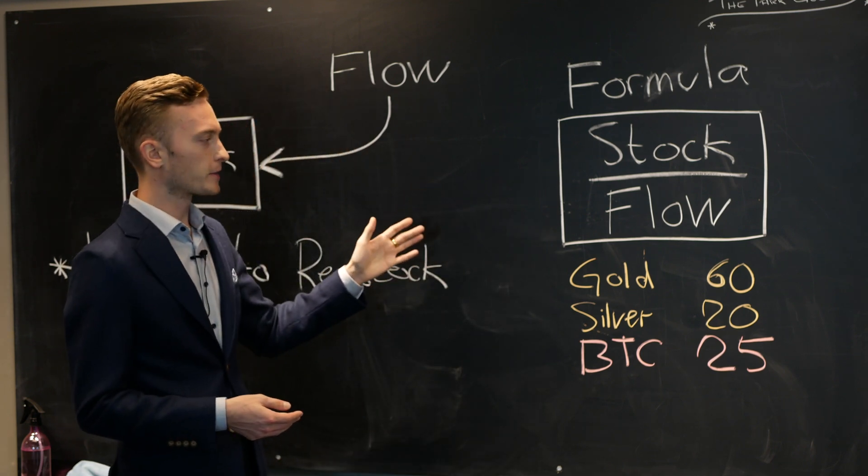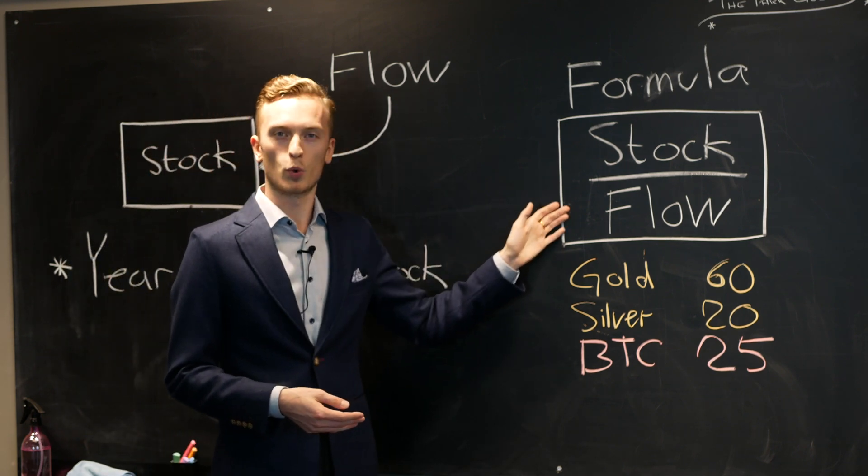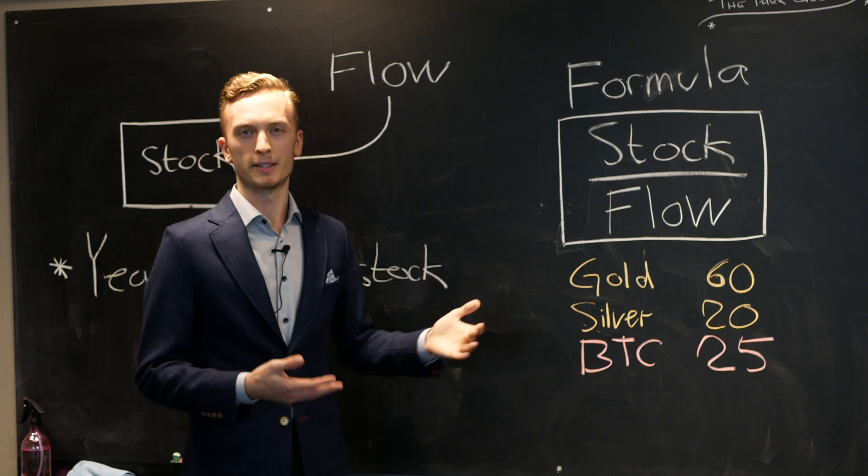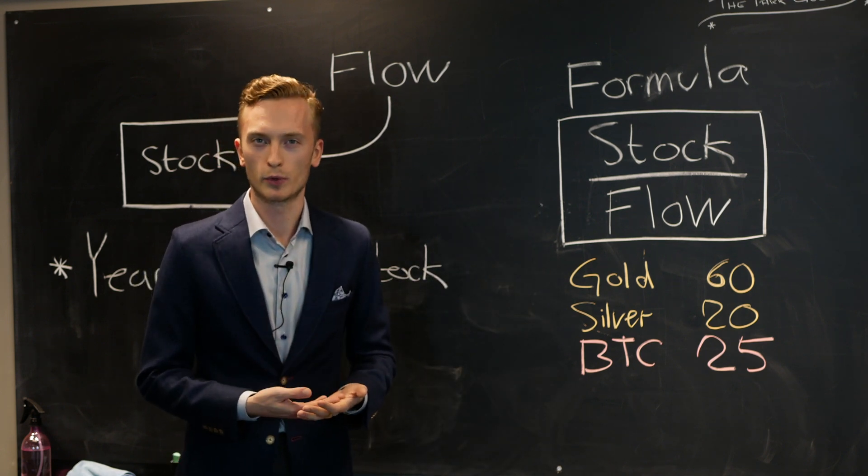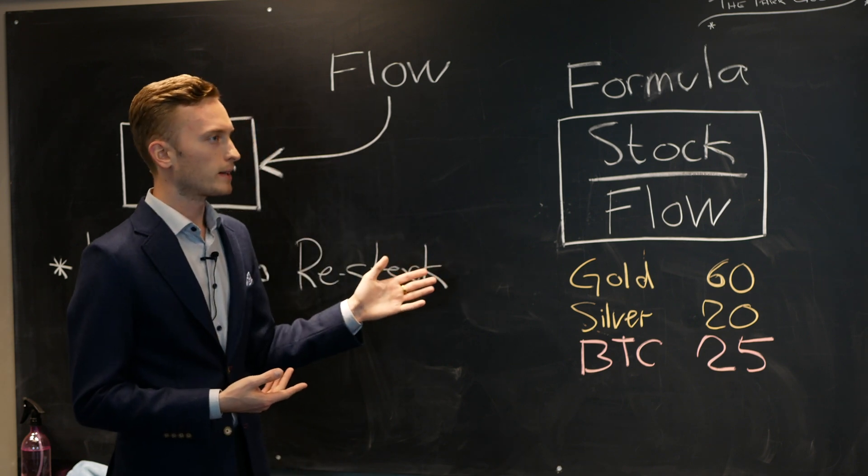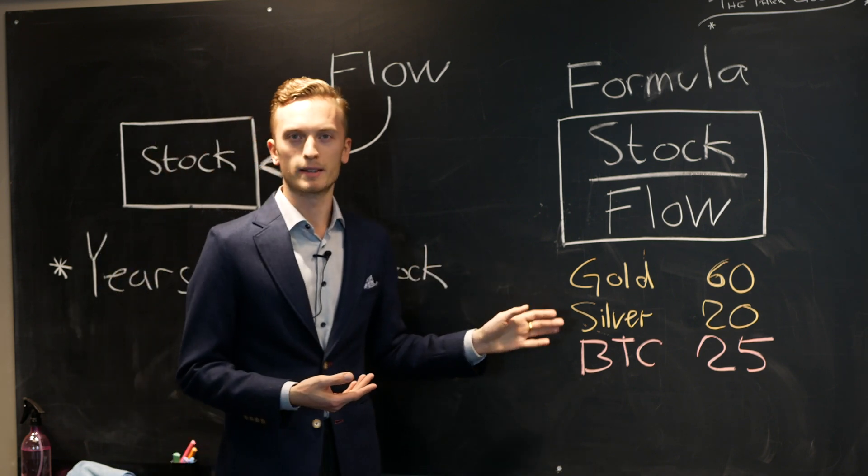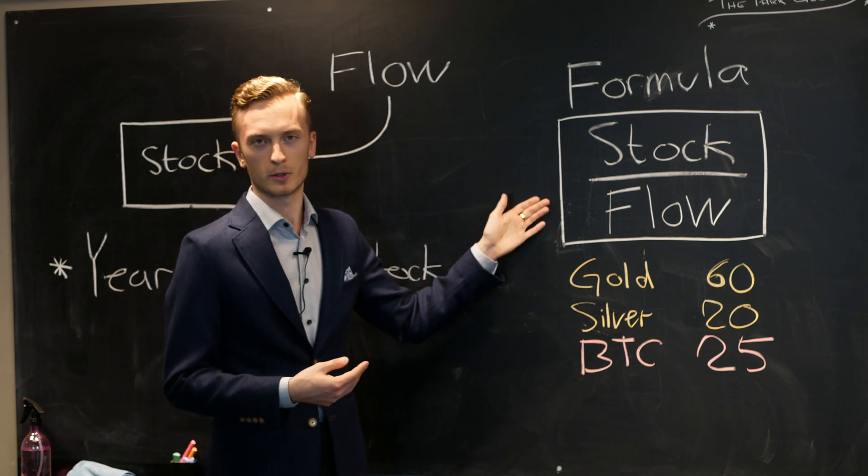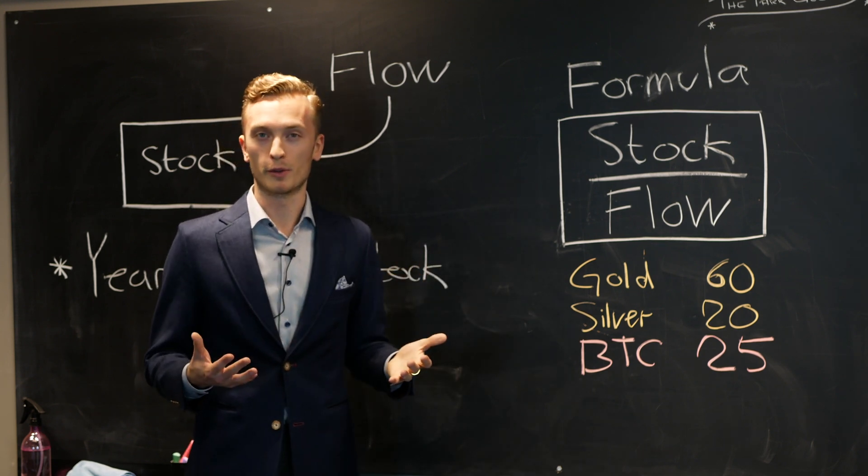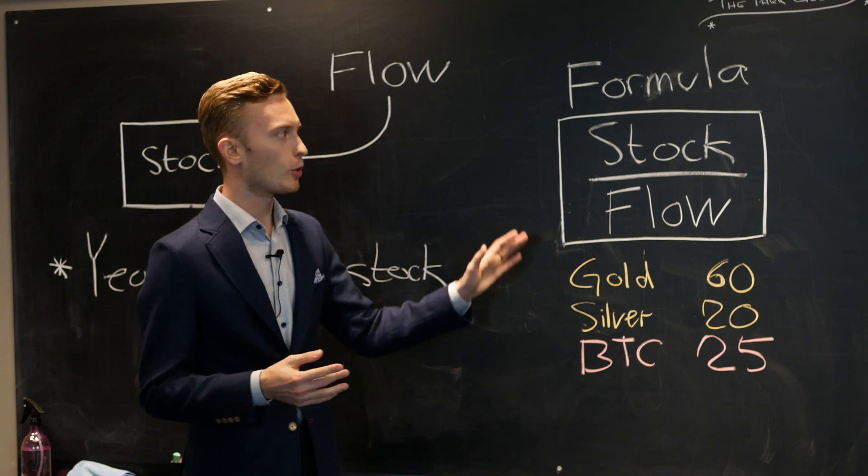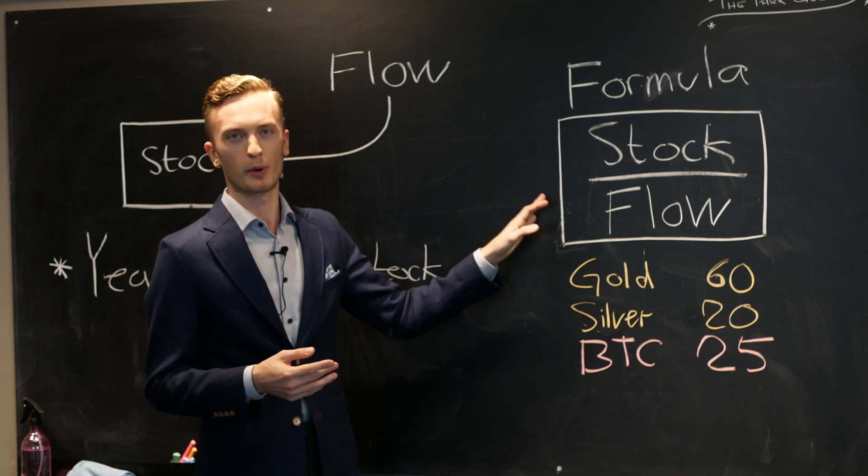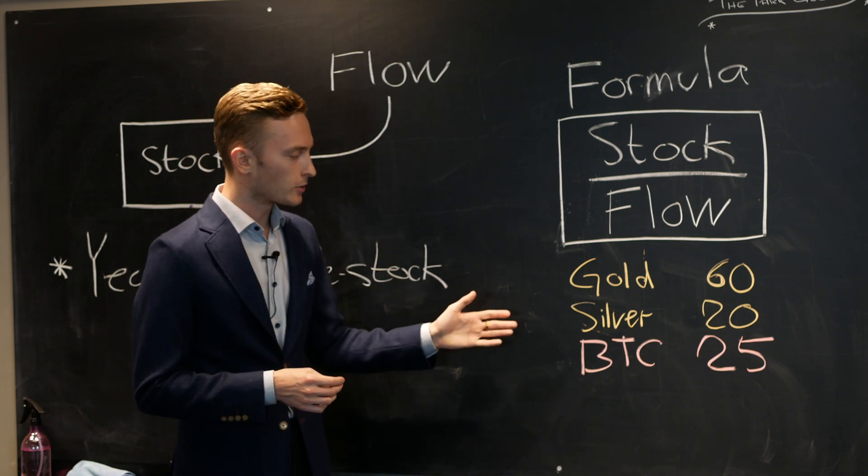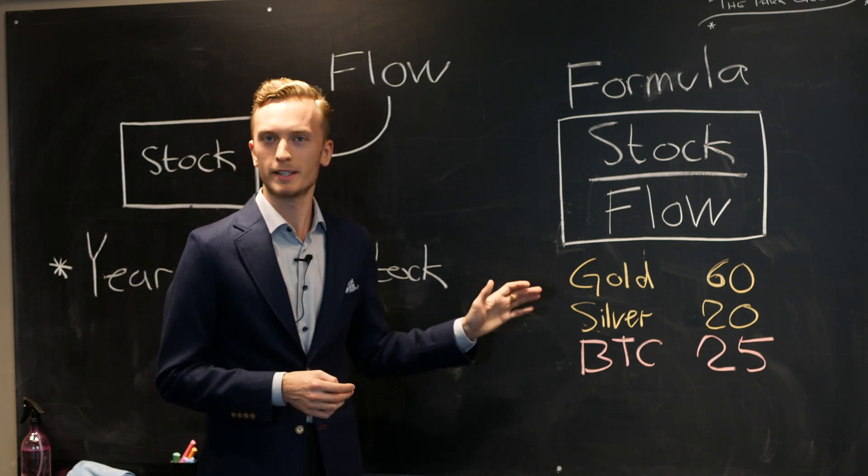In order for this model to actually be worth using, it actually has to be based on an asset that is desirable, that people actually want to own. As soon as the market has come to agreement that an asset is scarce and that it is valuable and that it is a store of value, then this model is a great modeling model of the price. But before that point, it's very hard to establish the price of an asset based on its stock to flow. But if the asset actually is popular, it is valuable and it is scarce, then the stock to flow model can tell us a lot about the asset and especially when we can compare it to other scarce assets and precious metals.